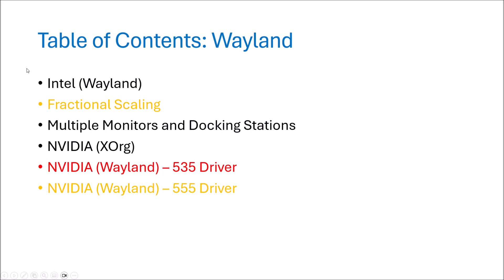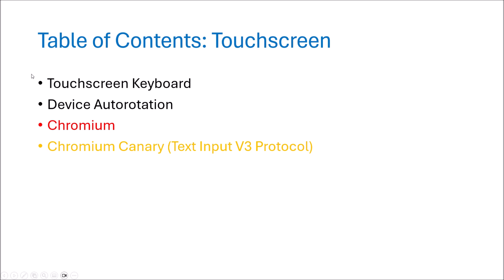Next I'll look at the display driver graphics model. You should be moving towards Wayland — Intel has full support, but some features like fractional scaling are not fully supported. They're enabled by default on Ubuntu but classified by GNOME as experimental, so they kind of work but you may encounter bugs. Then I'll cover multiple monitors, docking stations, and a system with an Nvidia graphics card. There are many issues with Nvidia drivers — Ubuntu defaults to the legacy X11 model, and switching to Wayland with the 535 driver causes problems, though these can be resolved by upgrading to the 555 driver.